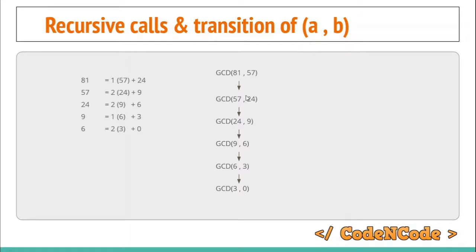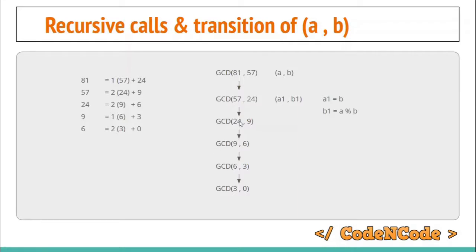There is a relation between successive function calls. If the current call has parameters a and b, and the next recursive call has parameters a1 and b1, then: a1 = b and b1 = a mod b. This relation holds for any two consecutive recursive calls and is defined by the recursive definition of the Euclidean Algorithm.